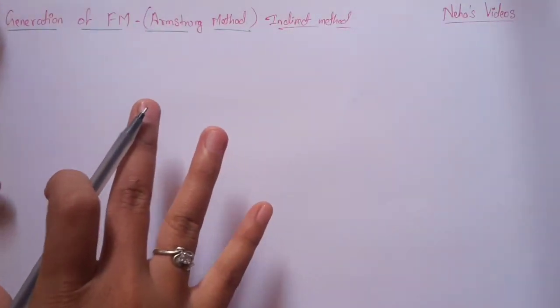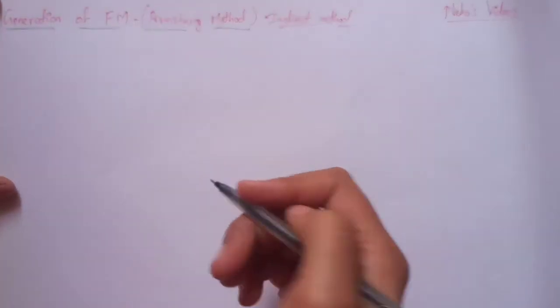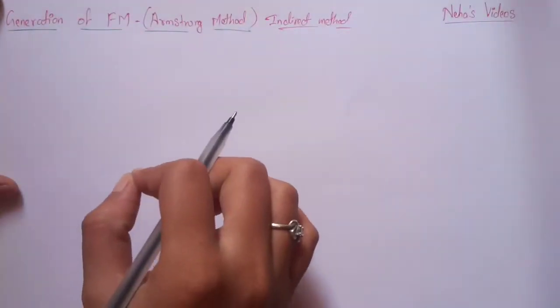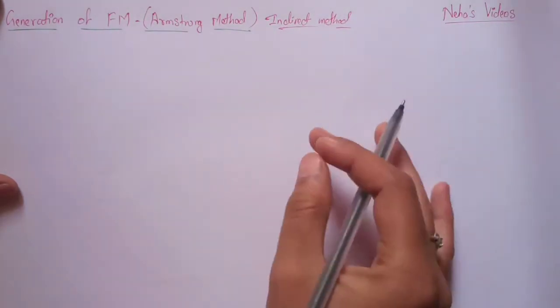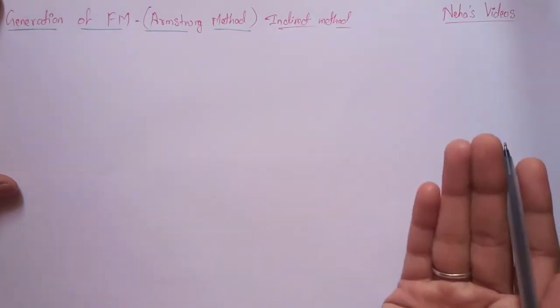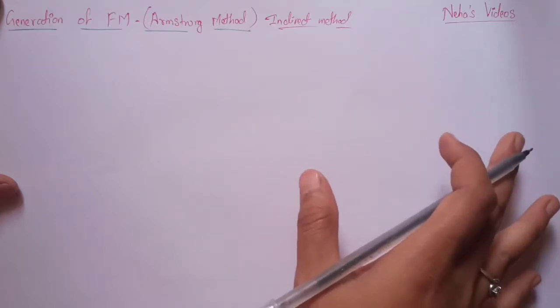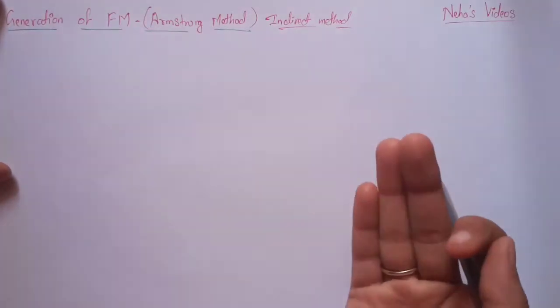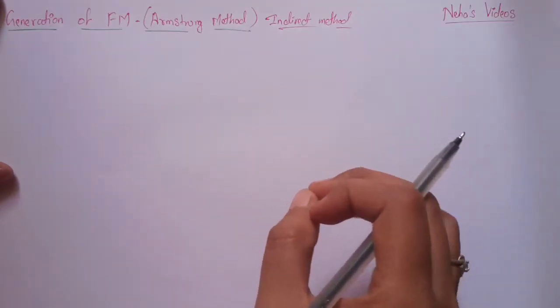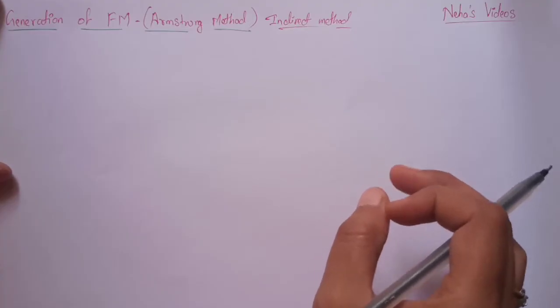The Armstrong method is also called the indirect method of FM wave generation. In the direct method, it is difficult to obtain higher-order stability in carrier frequency because carrier generation is directly affected by the message signal. Due to this, the direct method cannot be used for broadcasting systems. In the indirect FM method, to overcome that drawback, we use a crystal oscillator for getting higher-order stability of the carrier signal with high frequency, and FM is obtained through a phase modulator.